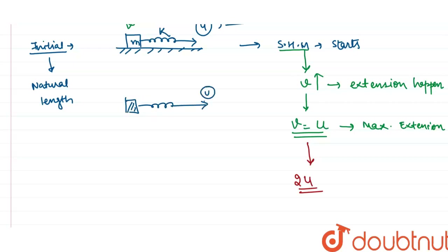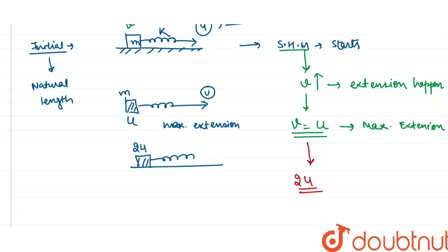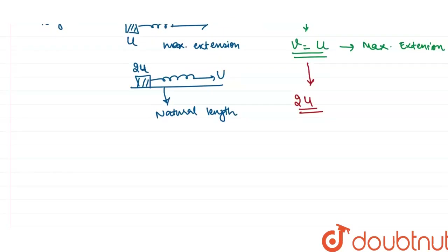At the position where the block velocity equals u, we have maximum extension. As we pull further, the block velocity increases still more. At double the spring velocity — 2u — we are back at the natural length position. If we continue pulling beyond that, compression begins.